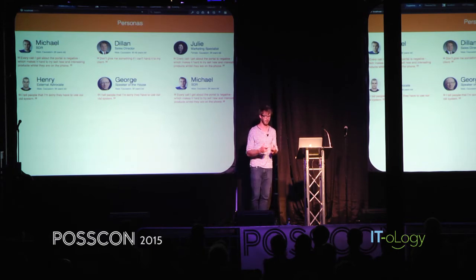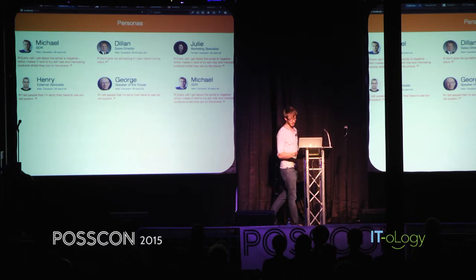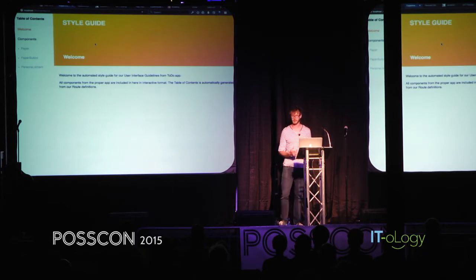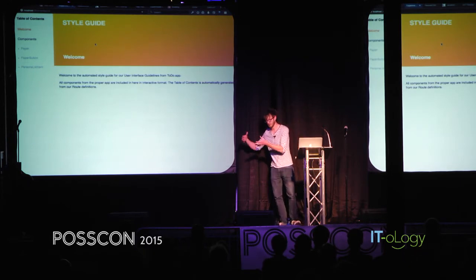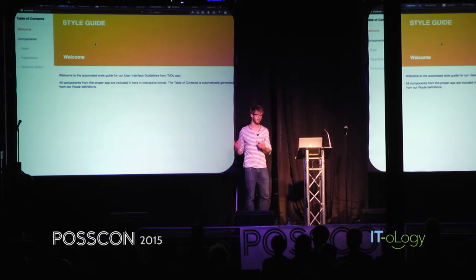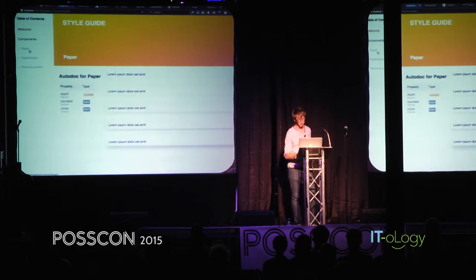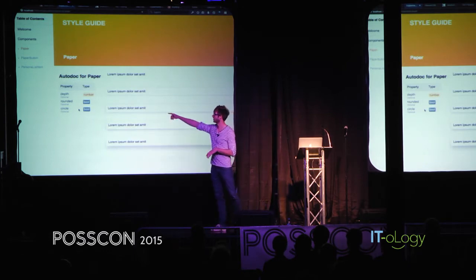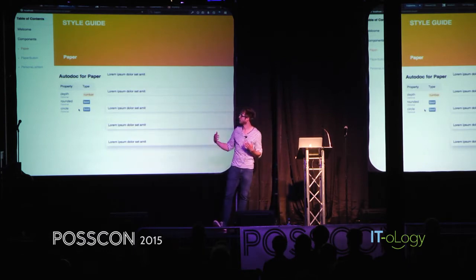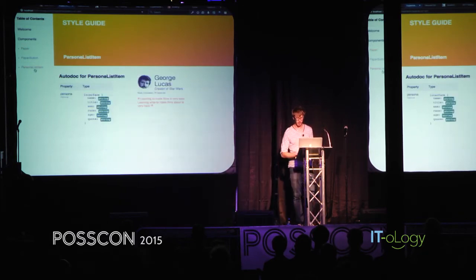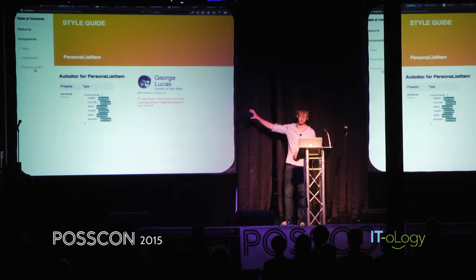But what if I could actually look at the source code that creates this and then automatically create style guides from that? We're working on style guides at Skookum — not just building a style guide with the designer's tool chain in isolation. It's actually, through the framework we're using, guaranteed to be the exact same code base used in production. We can automatically pull out documentation from the source file — like that paper takes a depth, rounded circle of these types, or that a persona list item takes a complex property which is a persona with six properties on it.